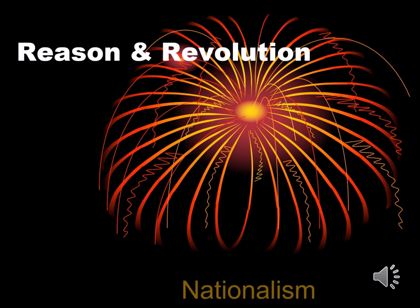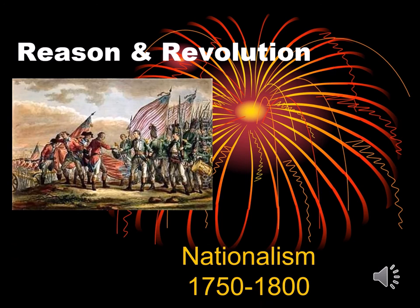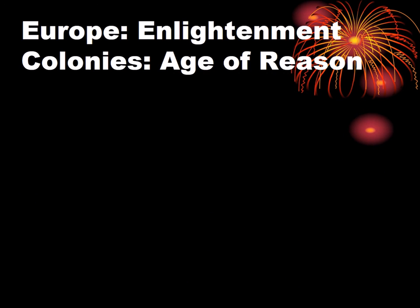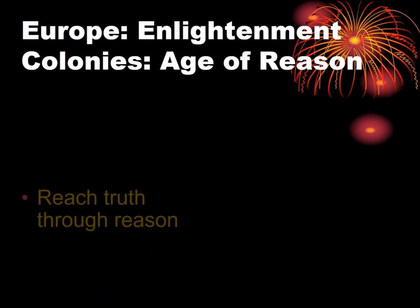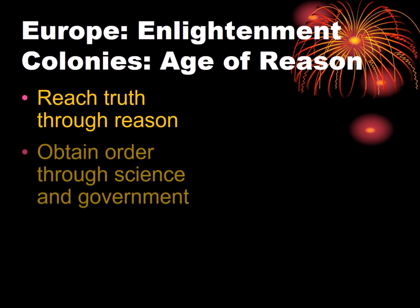In order to better understand what's happening in the American colonies at this time, it's helpful to acknowledge world influences. In Europe and other parts of the world, this time period is known as the Enlightenment. It was a time when reason, logic, and science were held in high regard. The great and influential thinkers of the time felt that it was possible to reach the truth through reason and logic, that society could obtain order and truth through science, and that humans had unlimited potential.